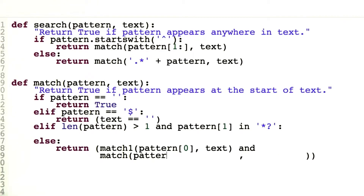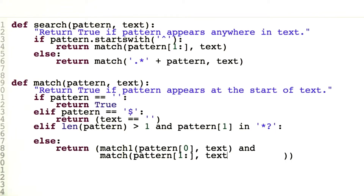And the answer is pretty easy. We just want to look at the pattern — say we already dealt with the first character, character 0, so now we just have to deal with the rest of the characters. And we already matched against the first character of the text, so now we just have to match against the rest of the text.